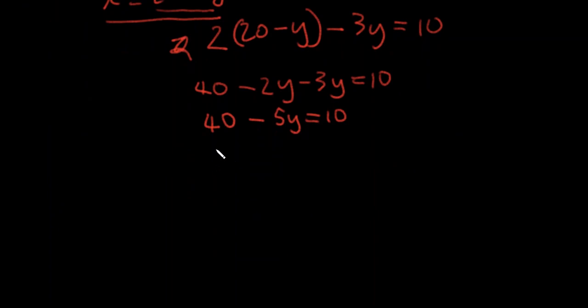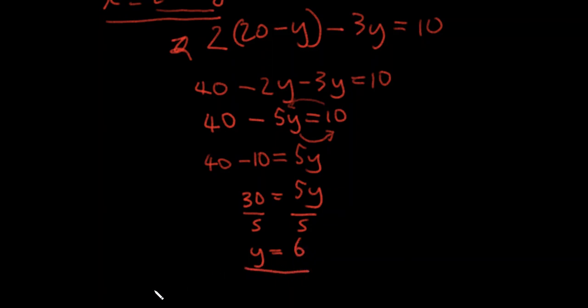And this simply means that if I bring 40 over, 40 minus 10 is equal to 5y. So if I take 5 to this side, 5y becomes positive. I take 10 to this side, 10 becomes negative. So I have 30 is equal to 5y. And if I divide both sides by 5, then I have y is equal to 6.